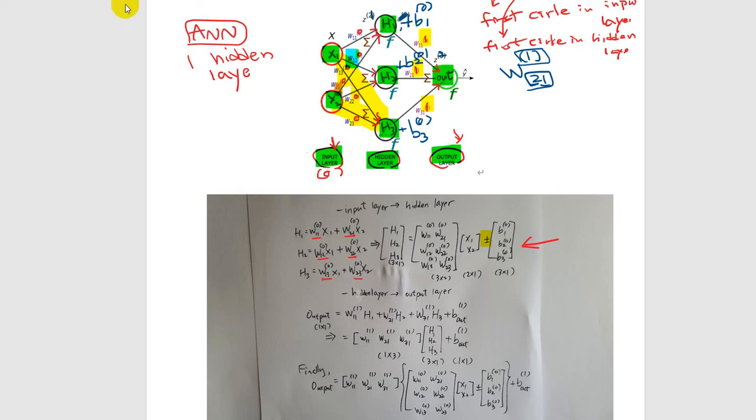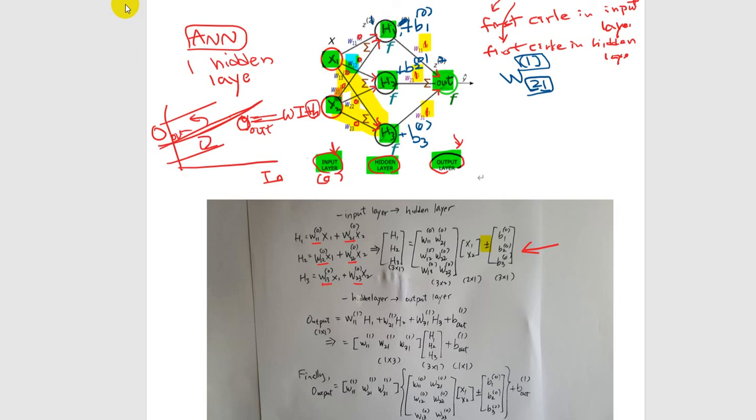Right now, as you know, bias is the intercept. This is the input value and this is the output value — a linear relationship expressed as y = wi + b. So b is the intercept. If b is added to the neural network, the function value goes up — it increases your linear relationship value. And it decreases if you subtract b from the neural values.